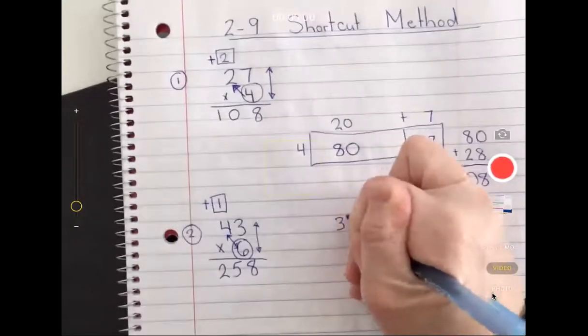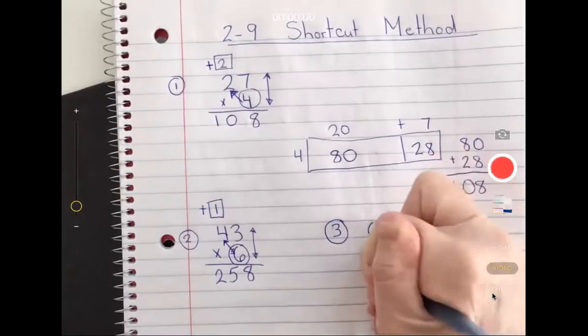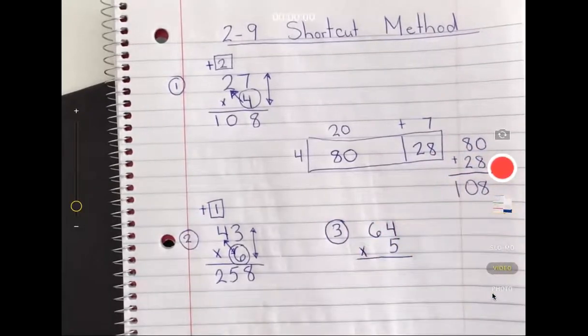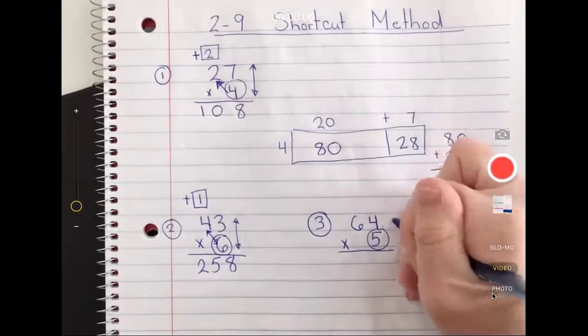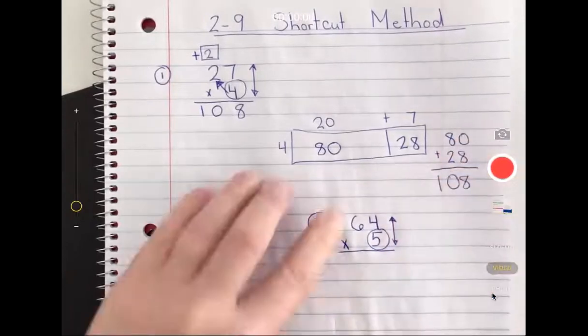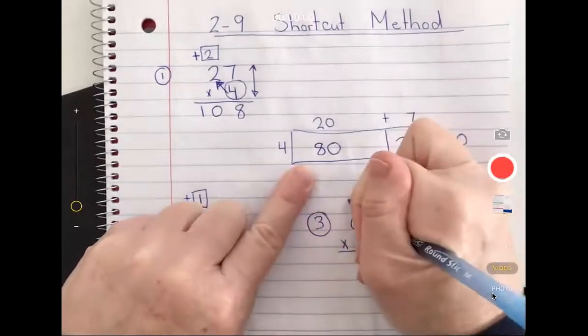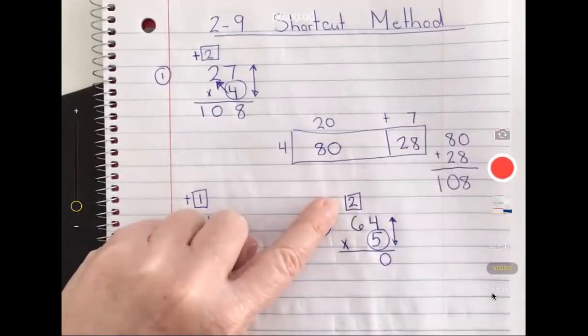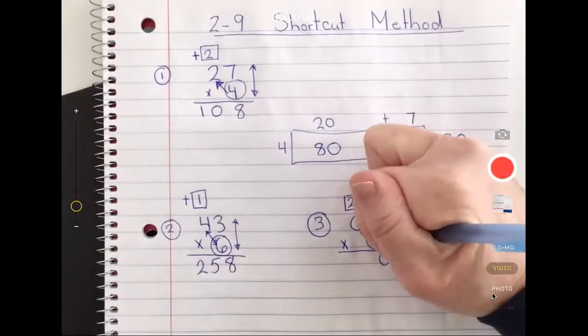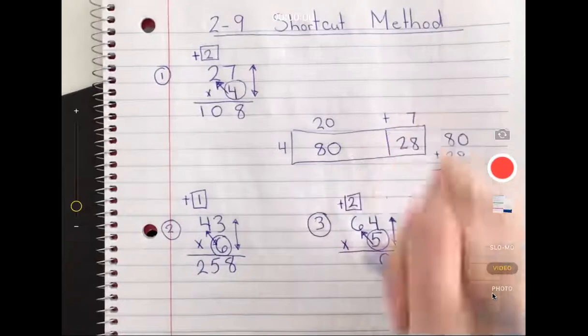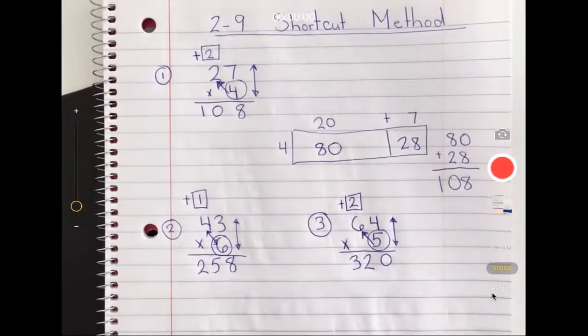Let's try another one. This is the shortcut method. Let's try sixty four times five. I like to circle this when I'm learning so I know where to start. I'm thinking five times four, I know that's twenty. My zero goes down and I bring my two up. Next I'm going diagonally, five times six, I know that's 30 plus the two makes 32, 320.